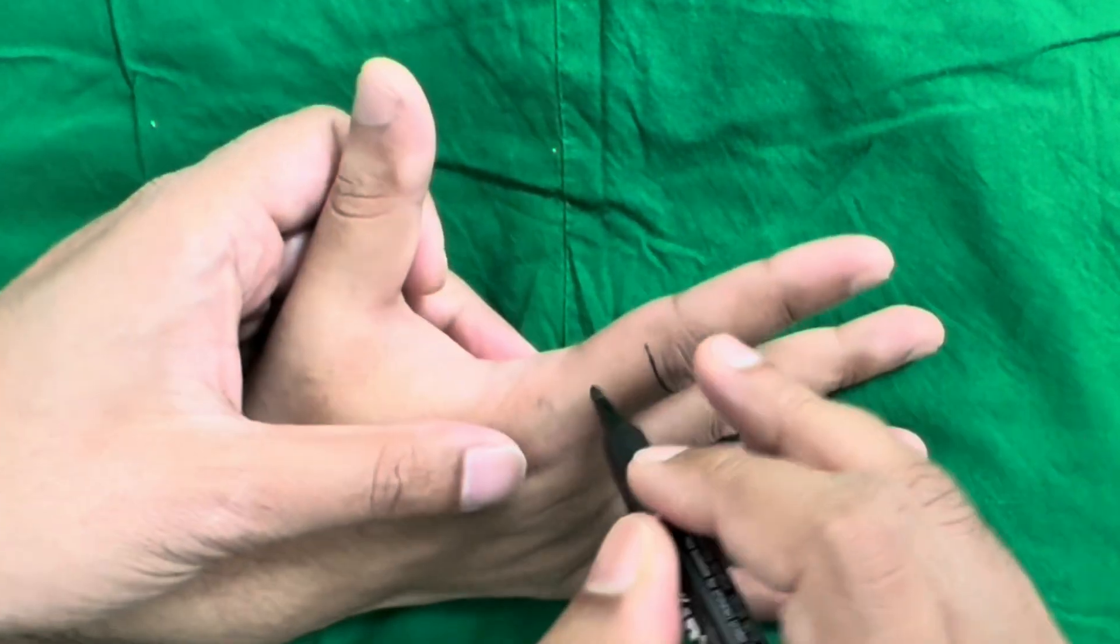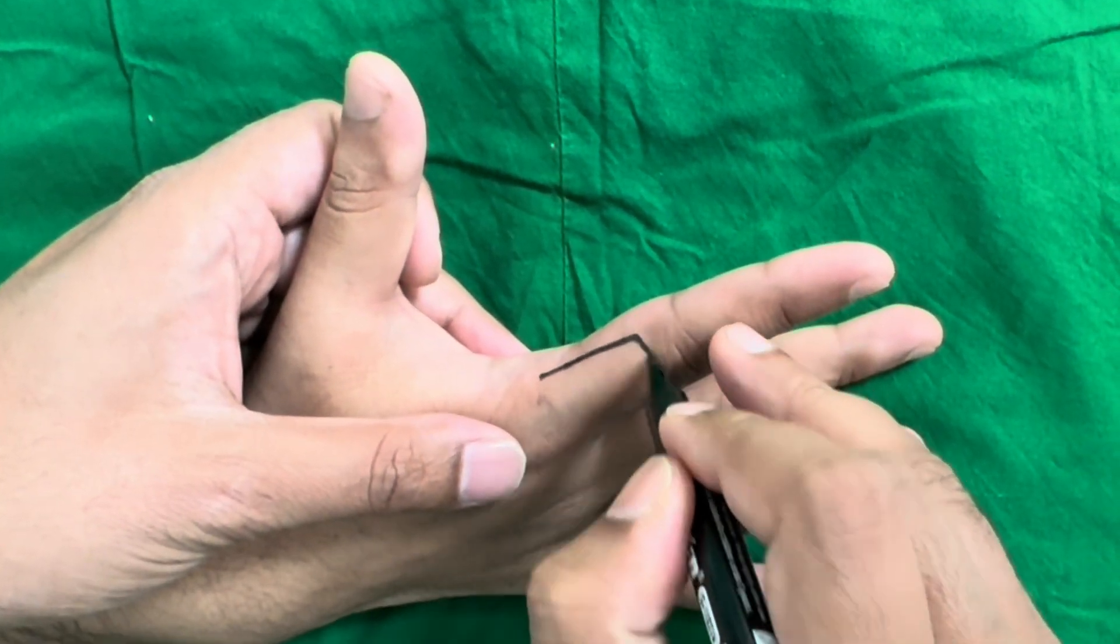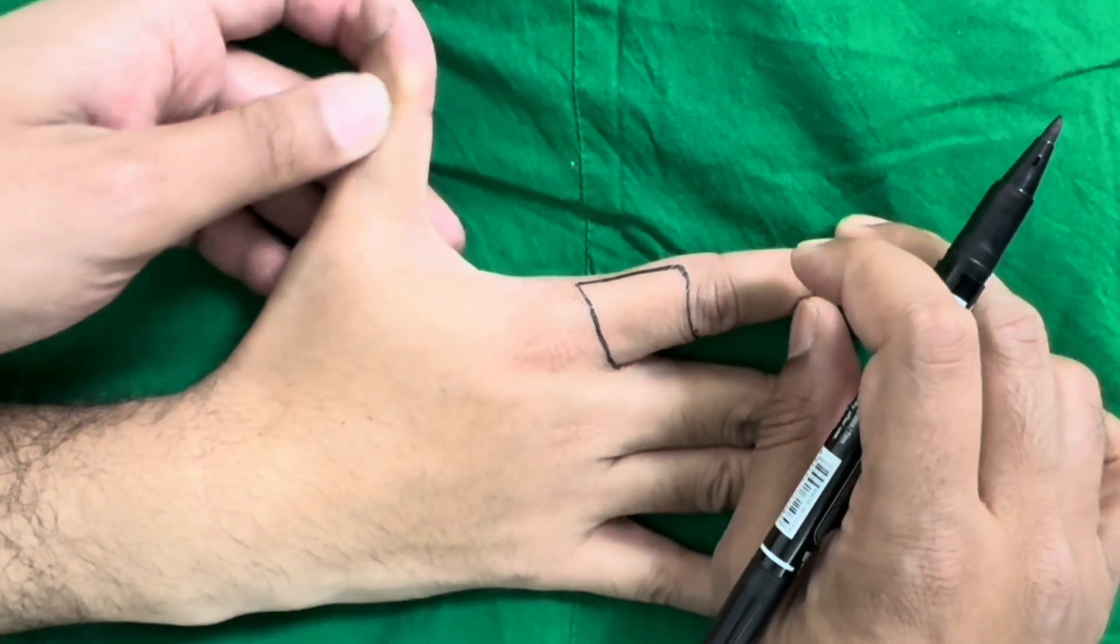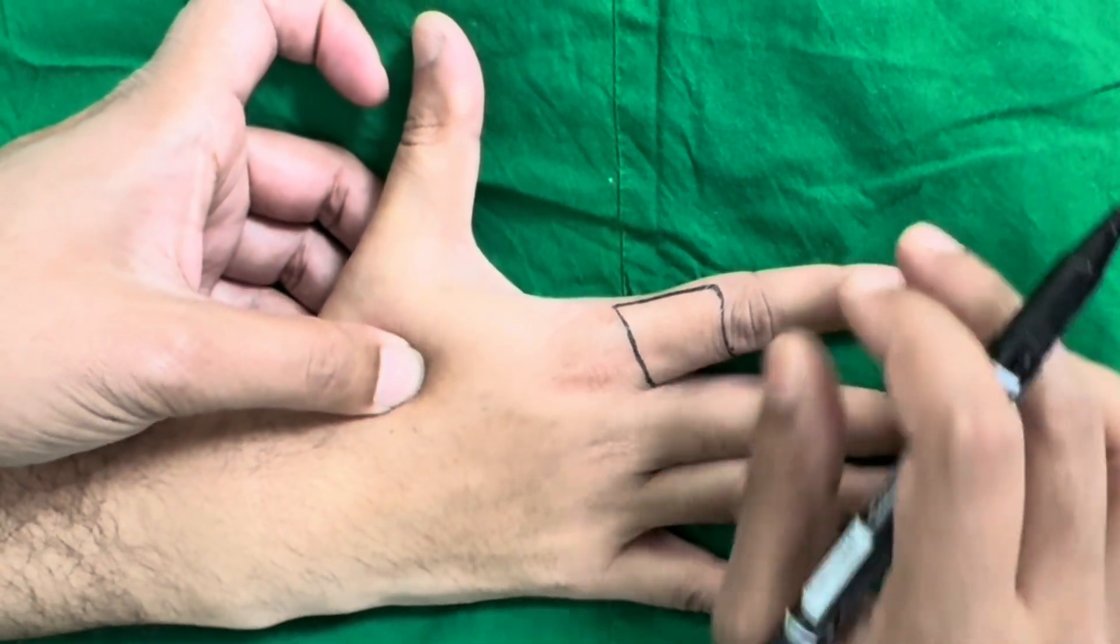There is a neutral line on the ulnar side and the radial side. To mark the pedicle, you have to identify two points. The first point is the apex of the first web space.